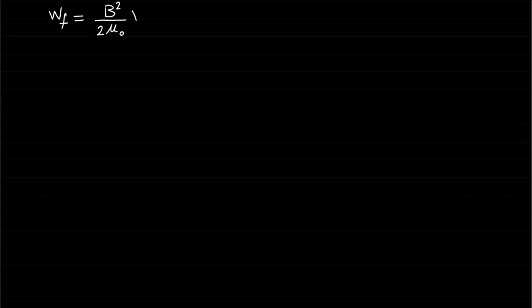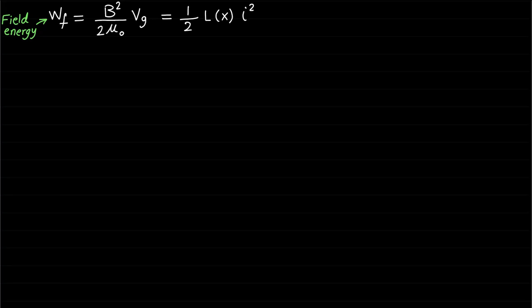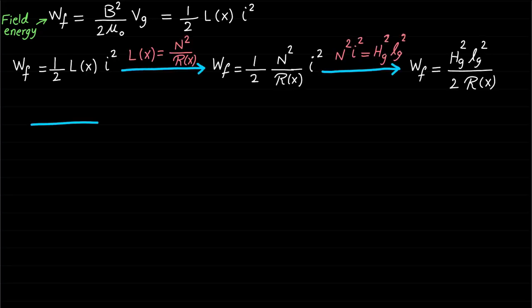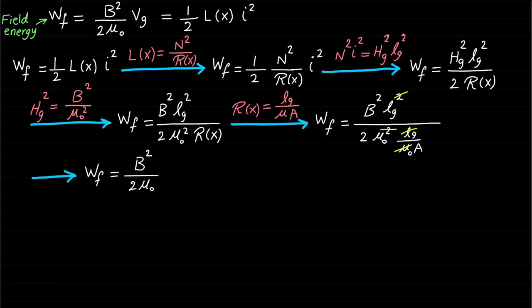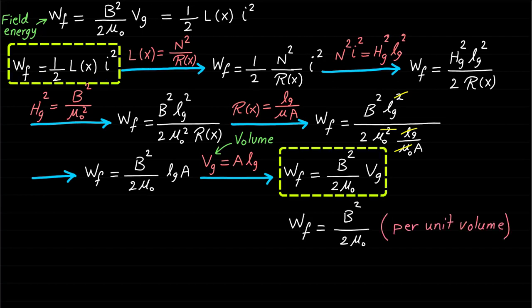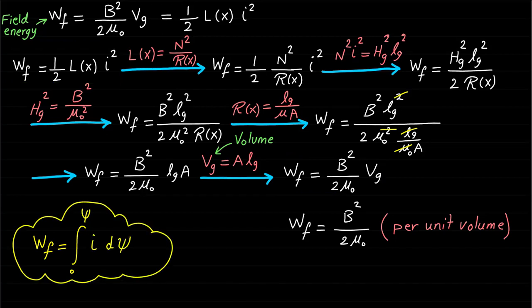Earlier, we developed the following expression for the field energy Wf in terms of the magnetic circuit variables. This expression should be equal to ½·L·I² and we can prove it. These two equations are equal and developed from the general expression of the field energy, and can be used for linear magnetic systems only.